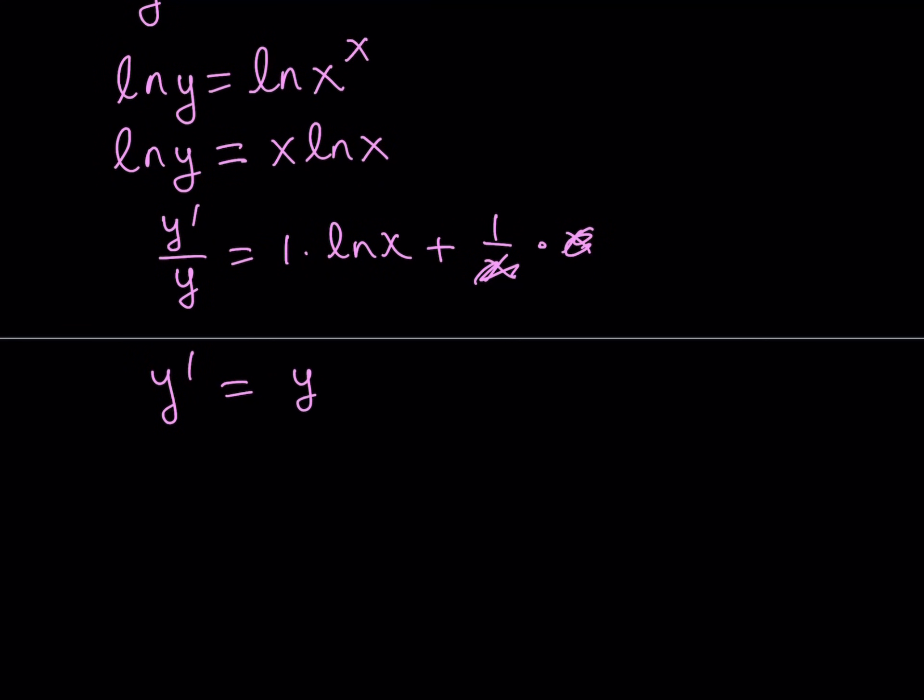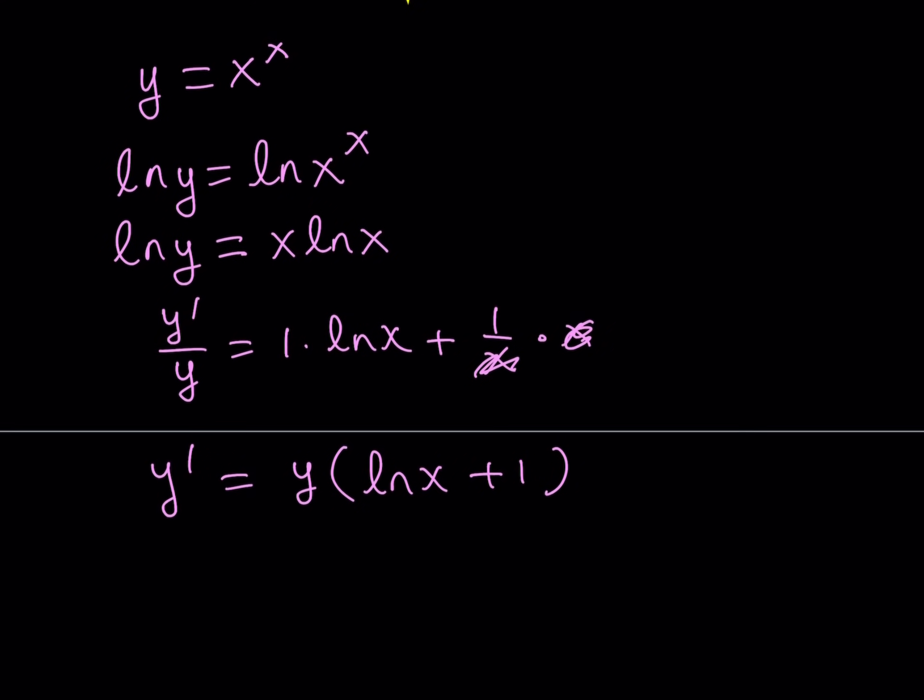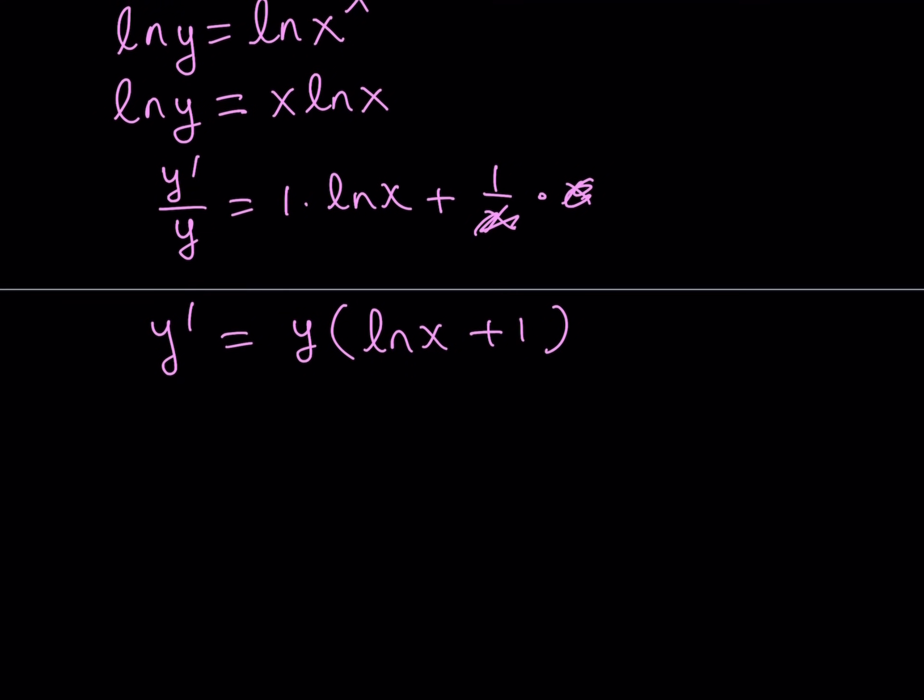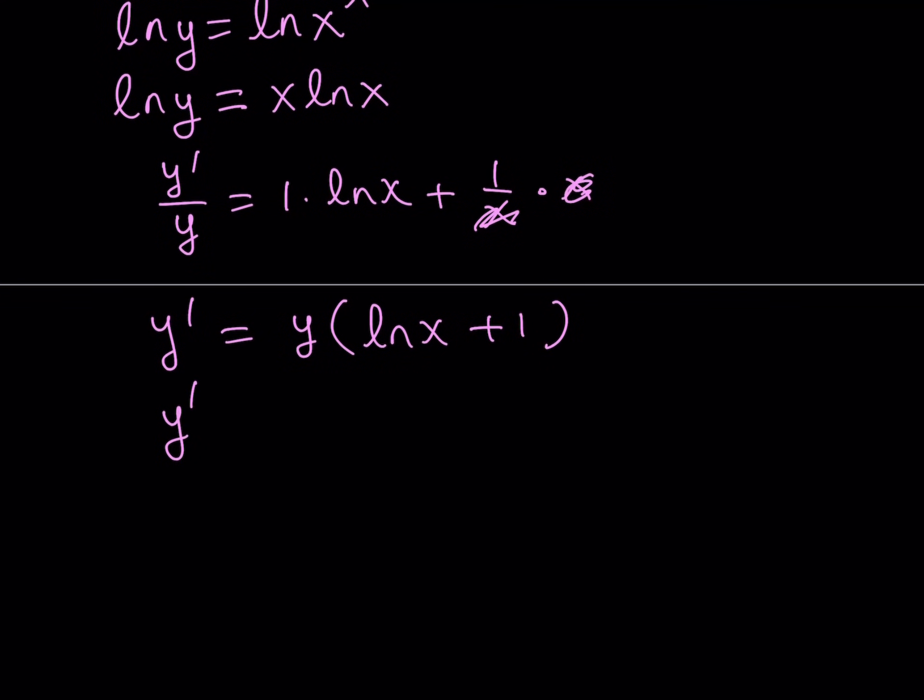And of course, I can multiply both sides by y. And this gives me ln x plus 1 multiplied by y. And since y is equal to x to the x from here, I can just go ahead and substitute that. And this is going to give me the derivative of this function. Now, why is finding the derivative critical here? Because you can look at it from a maximum-minimum perspective.